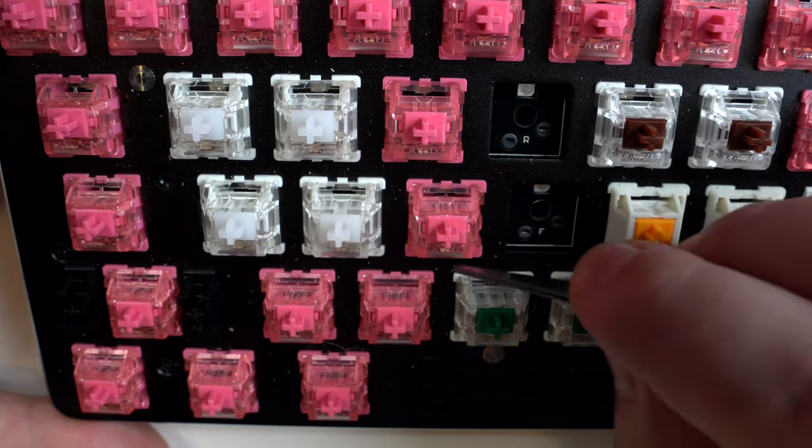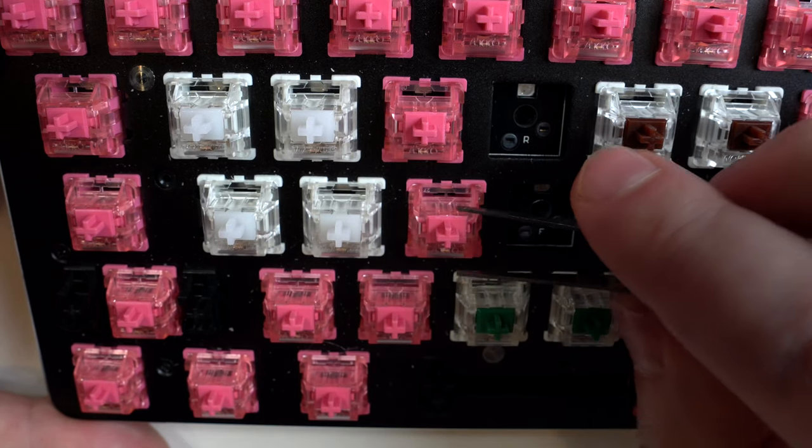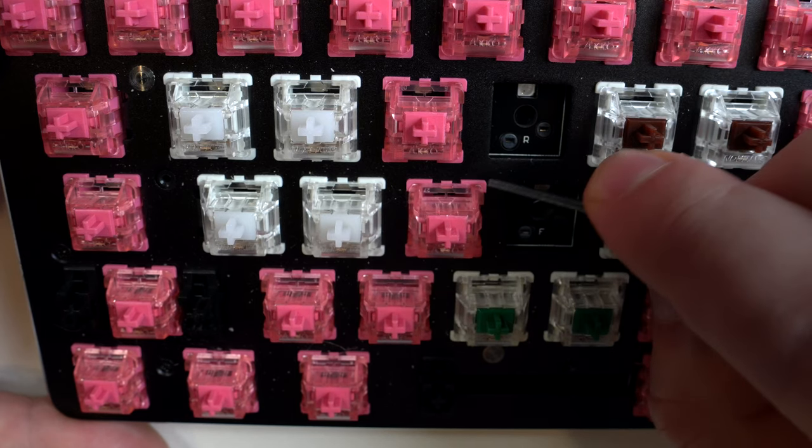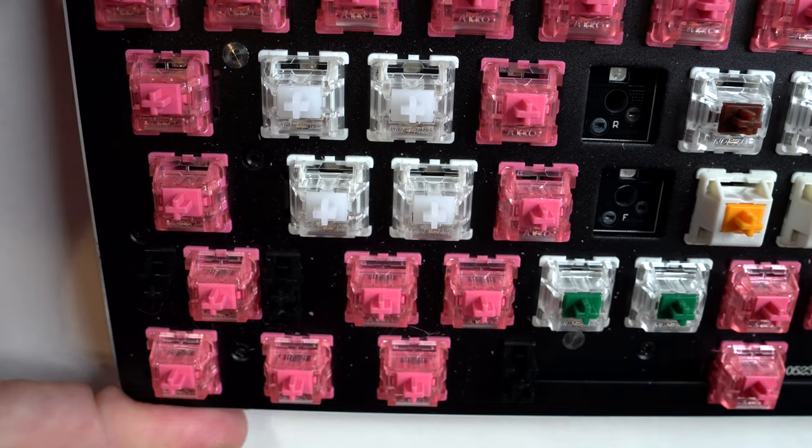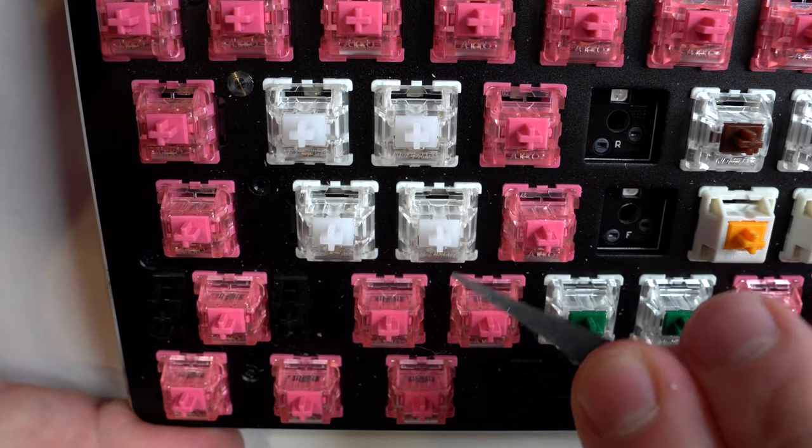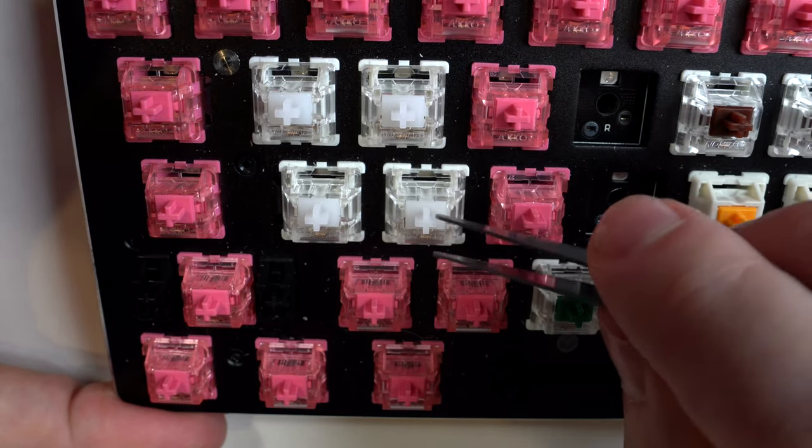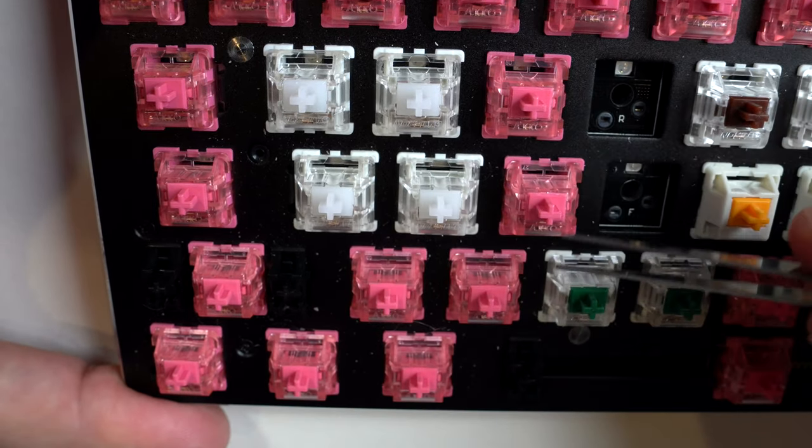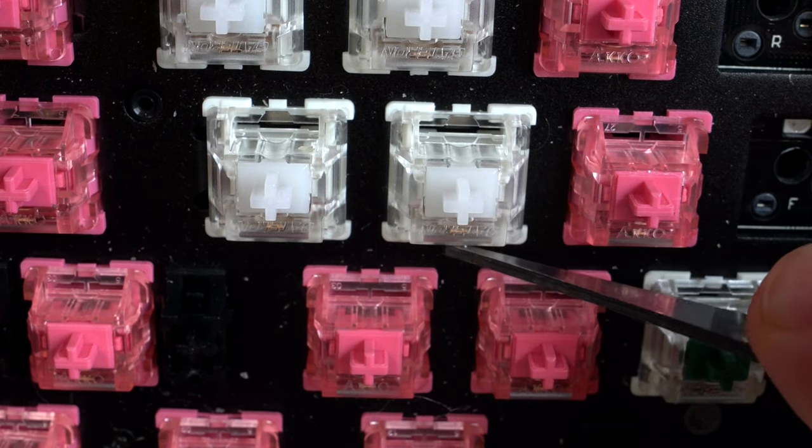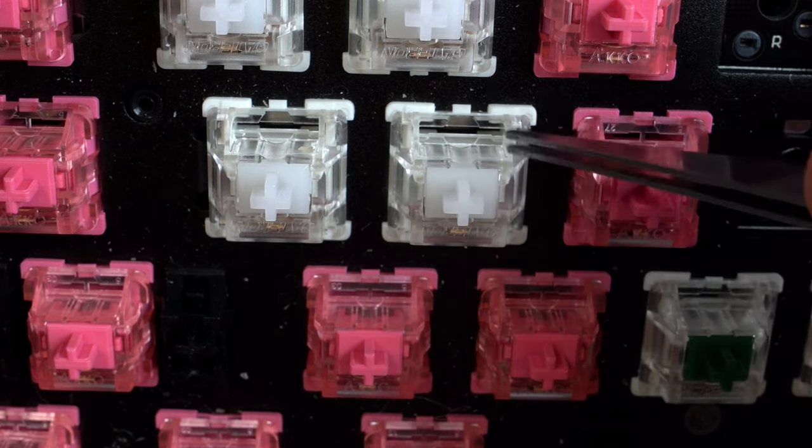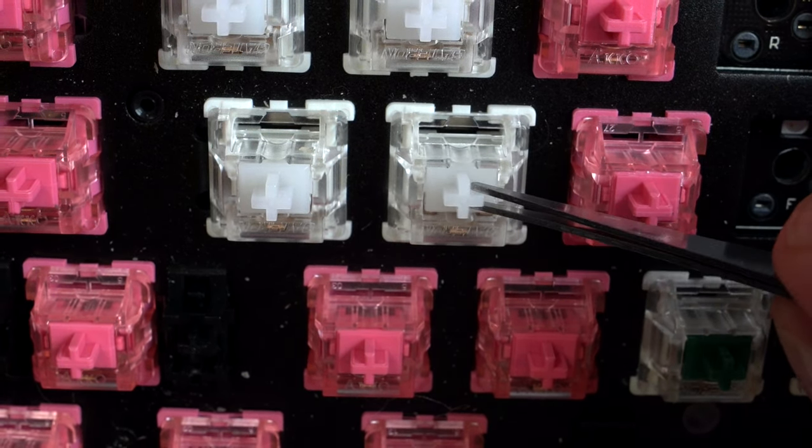Let me say that one more time. If the top housing wobbles back and forth, side to side, it might be a great candidate for a film, which is going to reduce the wobble by making the top and the bottom fit together, snap together tighter. That's what we're going for. And I'm not going to lie, I just know this because I did this yesterday, but these tactile switches, the browns, these are Gateron Browns, these are Gateron clears. These are probably going to need films. So I am actually going to come in here. See if I can let you see this better. Ever so slightly, you see the top housing wiggling and wobbling around. The switch is in there nice and tight. The bottom housing is not moving, but the top is, you can see it just barely.